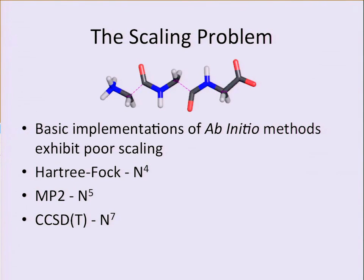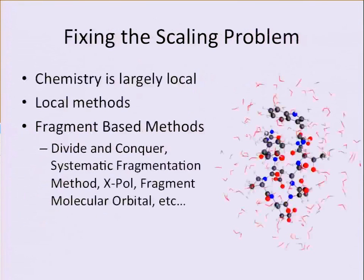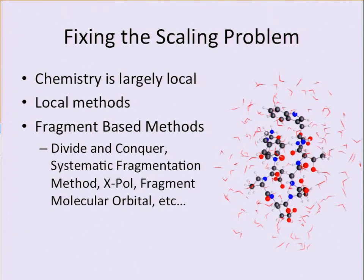This problem has been well known for a long time. One way people have addressed it is the idea that chemistry is largely local. We think about functional groups and substituent blocks — an atom is affected much more by its nearby neighbors than by distant atoms. Standard methods don't recognize that idea and treat all atom-atom interactions essentially the same, wasting computation on integrals that don't significantly affect the final answer. There are two approaches: local methods, which I won't discuss, and fragment-based methods, which is what I do.